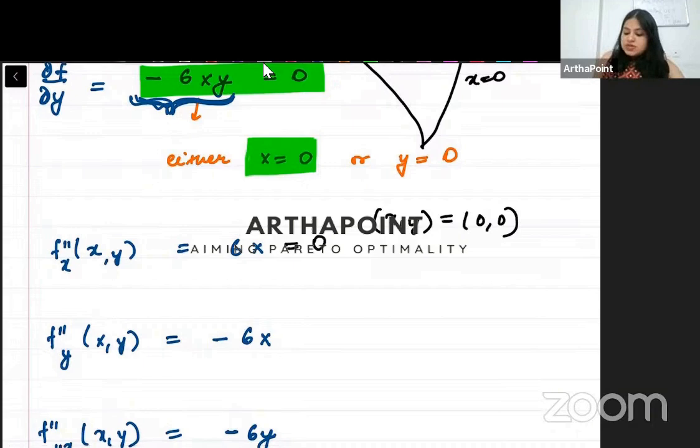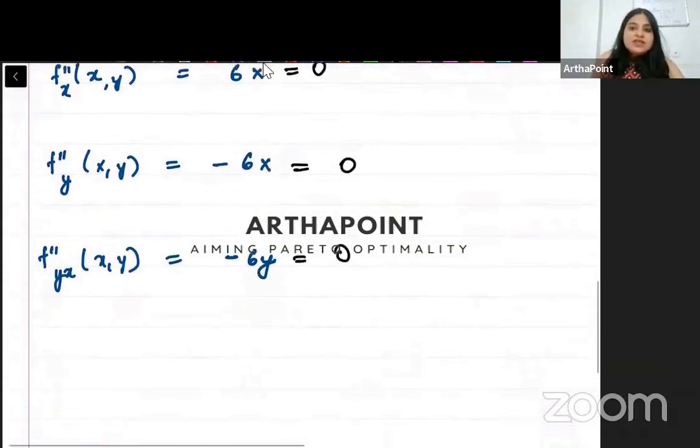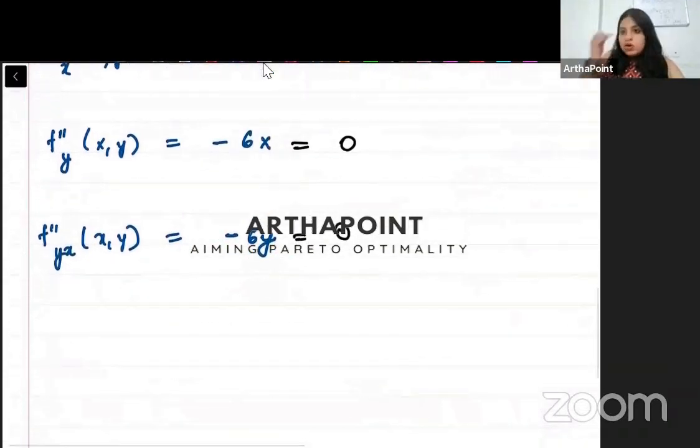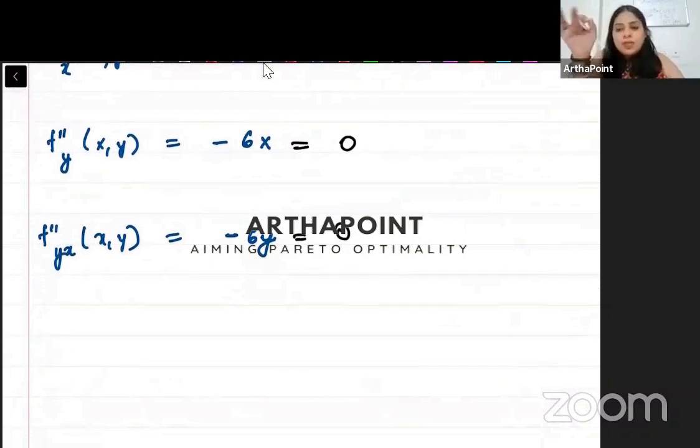At (0, 0), all the second derivatives - f_xx, f_yy, and f_xy - are all 0.